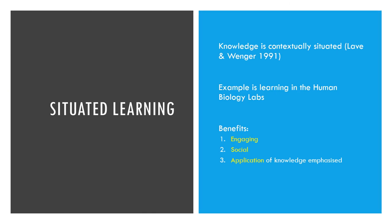Situated learning says knowledge is learned within a context in which the learning will be used. An example is learning organ structures in human biology labs or another clinical setting. Situated learning engages us in the learning, encourages social learning, and learning becomes more applicable to real-world settings, which is important in human biology as all learned theory has to be applied to real people.